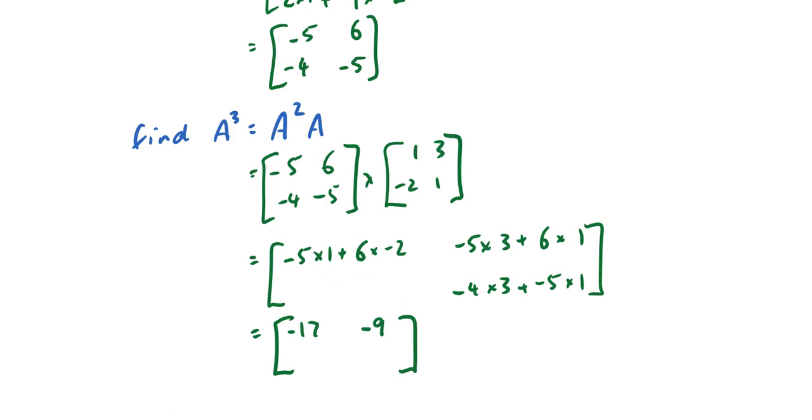This is what happens when you try to rush. Negative 5 times negative 1 plus 6 times negative 2. Try again. Negative 4 times 1 plus negative 5 times negative 2. That looks better. And there's our final answer.